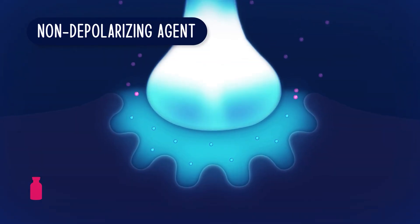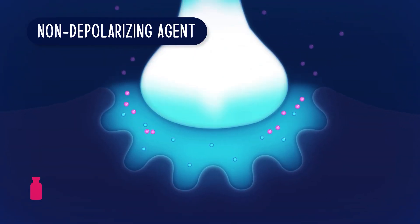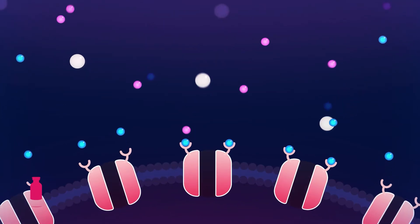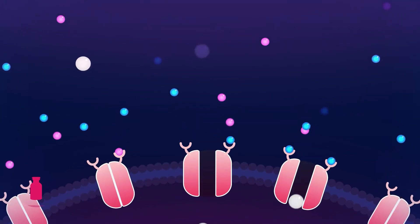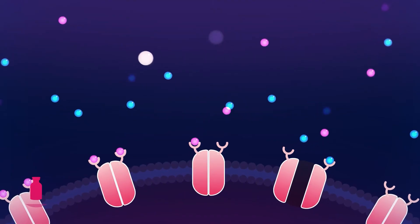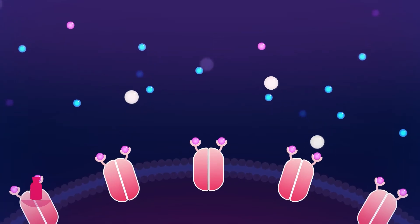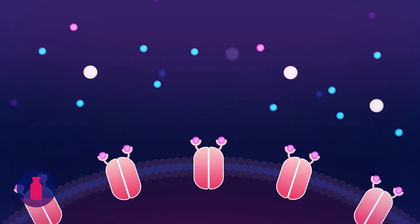Non-depolarizing agents act on both the pre- and post-synaptic receptor sites. The agent binds the post-synaptic receptors on the muscle fiber, thereby blocking the acetylcholine from binding to the same receptor sites. The more receptors the blocking agent occupies, the less opportunity the acetylcholine has to bind to those same receptor sites.